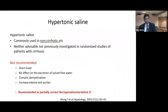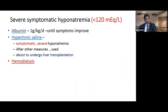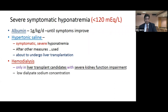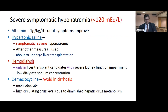Hypertonic saline is not recommended in cirrhotics, unlike non-cirrhotics where it is commonly used. It is recommended only to partially correct hyponatremia before liver transplant. For severe symptomatic hyponatremia with sodium less than 120, albumin can be given until symptoms improve. Hypertonic saline is reserved only for symptomatic severe hyponatremia when all other measures have failed and the patient is about to undergo transplant. Hemodialysis is an option only in liver transplant candidates with severe kidney function impairment, using low dialysate sodium concentration. Demeclocycline must be avoided in cirrhotics due to nephrotoxicity and diminished hepatic drug metabolism.